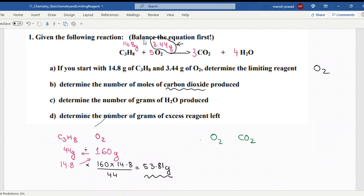Now 5 oxygen, 160 grams of oxygen gives us 44 into 3, that is 132 grams of carbon dioxide. We have 3.44 grams of oxygen, so how many grams of carbon dioxide is produced? Again the same thing, multiply and then divide. Please use your head, I have more faith in your head than the calculator on your phone.